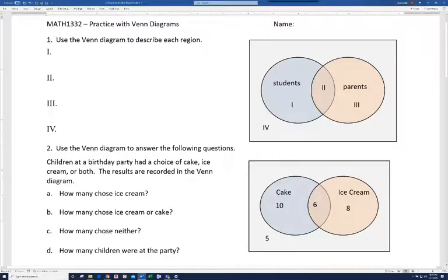Well, we have two sets here, so there's really two qualities here. Are you a student? Are you a parent? And in each of these four regions, we can say something in regards to both of those. So for region one, these are students who are not parents. Okay, so in each case, you should say something about being a student and or being a parent.